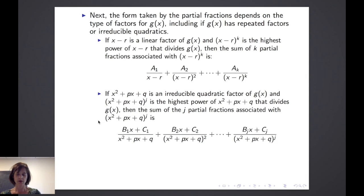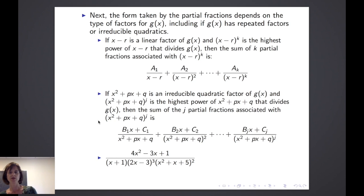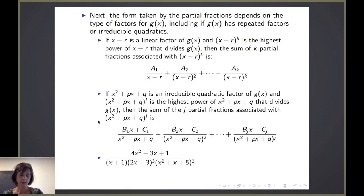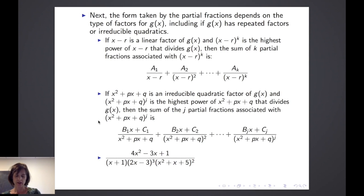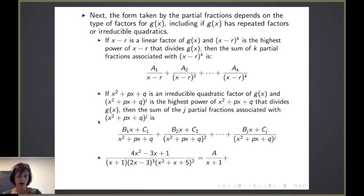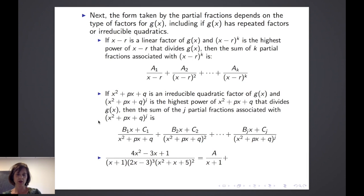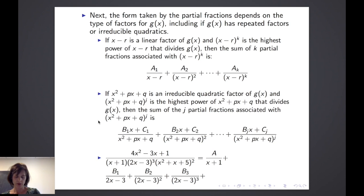So what does this look like? Let's consider briefly an example. Suppose I have (4x² − 3x + 1) divided by (x + 1)(2x − 3)³(x² + x + 5)². The powers on the factors tell us how many partial fractions we'll have associated with each factor. There's a power of 1 on (x + 1), so we have one fraction: A over (x + 1). The power of 3 on (2x − 3) means three partial fractions: B₁ over (2x − 3), plus B₂ over (2x − 3)², plus B₃ over (2x − 3)³.